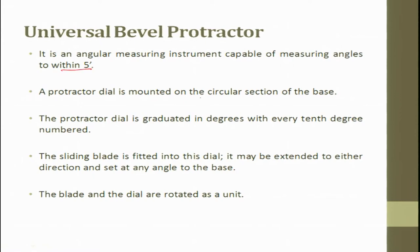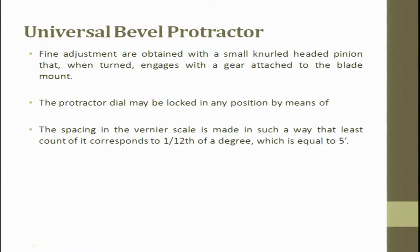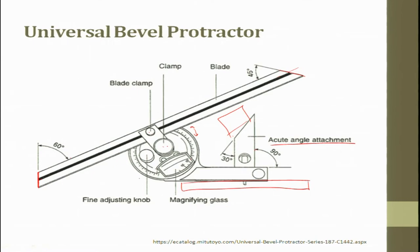The protractor dial is mounted on a circular cross section of the base and is graduated in degrees with every tenth degree numbered. The slide blade is fitted into the dial and may be extended in either direction, set at an angle to the base. The blade and dial are rotated as a unit, and fine adjustments are obtained with a small knurled-headed pinion so that we can match the vernier and the protractor angles.